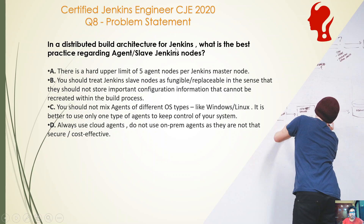In a distributed build architecture for Jenkins, what is the best practice regarding the agent or slave Jenkins node? Option A: there is a hard upper limit of five agent nodes per Jenkins master node. Option B: you should treat Jenkins slave nodes as fungible or replaceable in the sense that they should not store important configuration information that cannot be recreated within the build process. Option C: you should not mix agents of different OS types like Windows or Linux — it is better to use only one type of agent to keep control of your system. Option D: always use cloud agents; do not use on-prem agents as they are not that secure or cost effective.